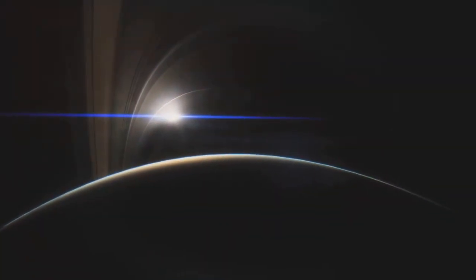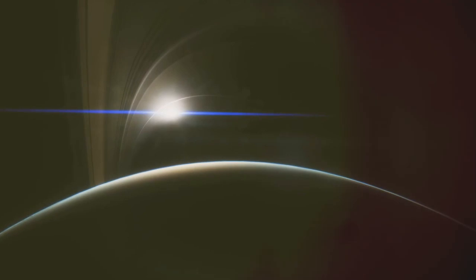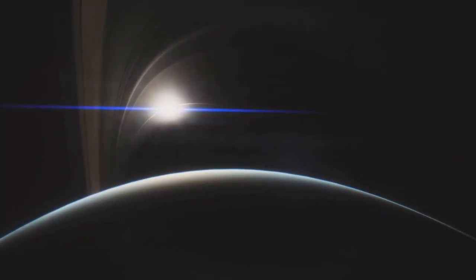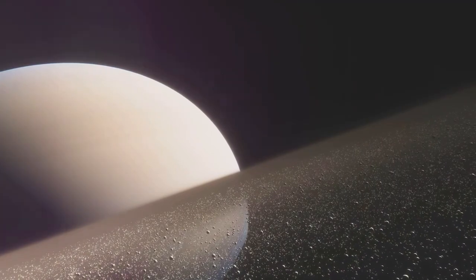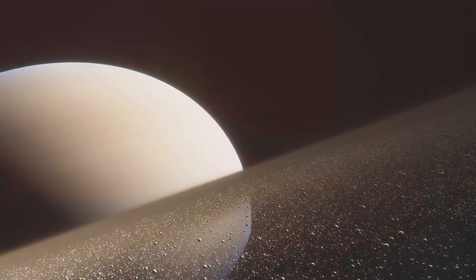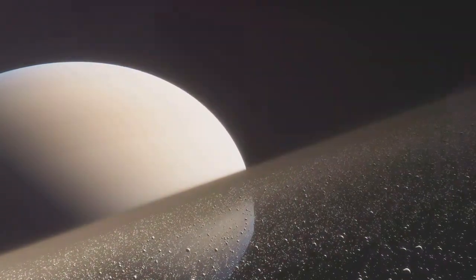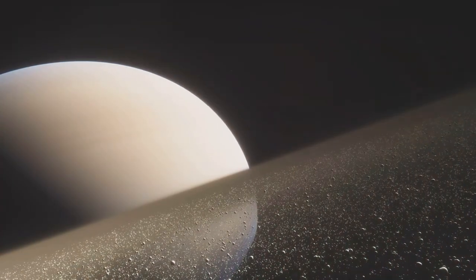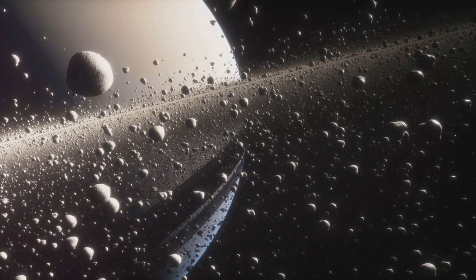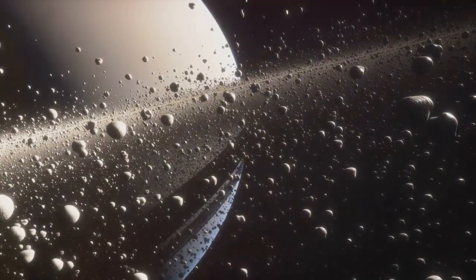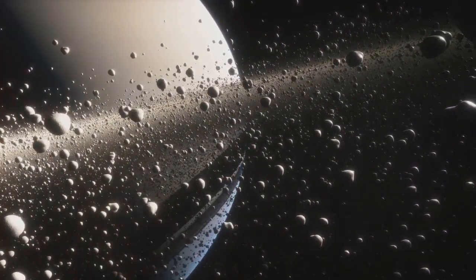Planetary rings are not solid structures. They are composed of countless particles orbiting their planet. These particles can range in size from tiny dust grains to boulders as large as a house. Now you may be wondering, what are these particles made of? The answer primarily lies in ice. The majority of these particles are composed of water ice, with the rest being rock and dust.